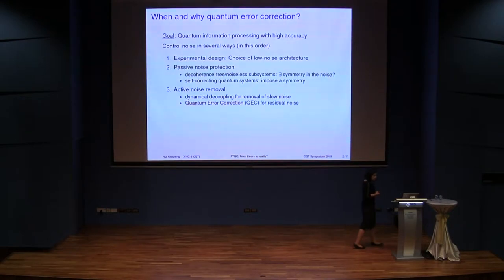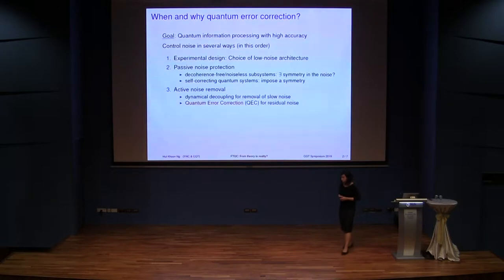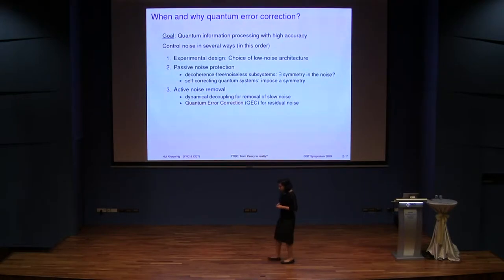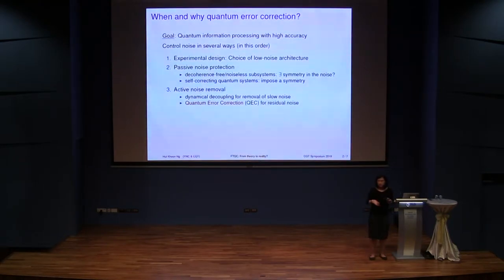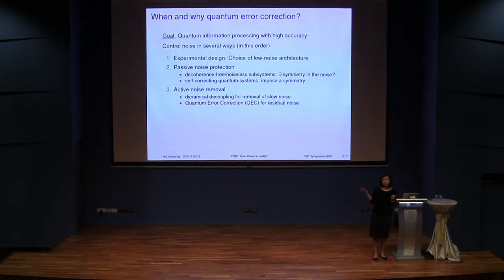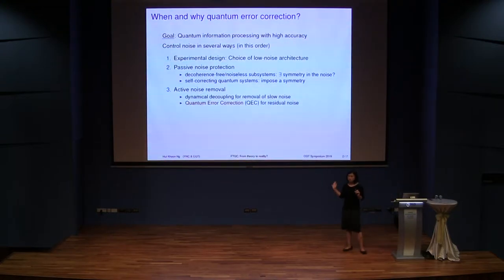The next thing you can do is what I call passive noise protection — passive in the sense that you don't really need to do anything to it if you're lucky. This is really looking for some sort of symmetry inside your noise process: a symmetry so that there is some part of your quantum state space where the noise sees all the states as identical and acts more or less as the identity. If you can find such a space, you just store your quantum information there and you'll be home free.